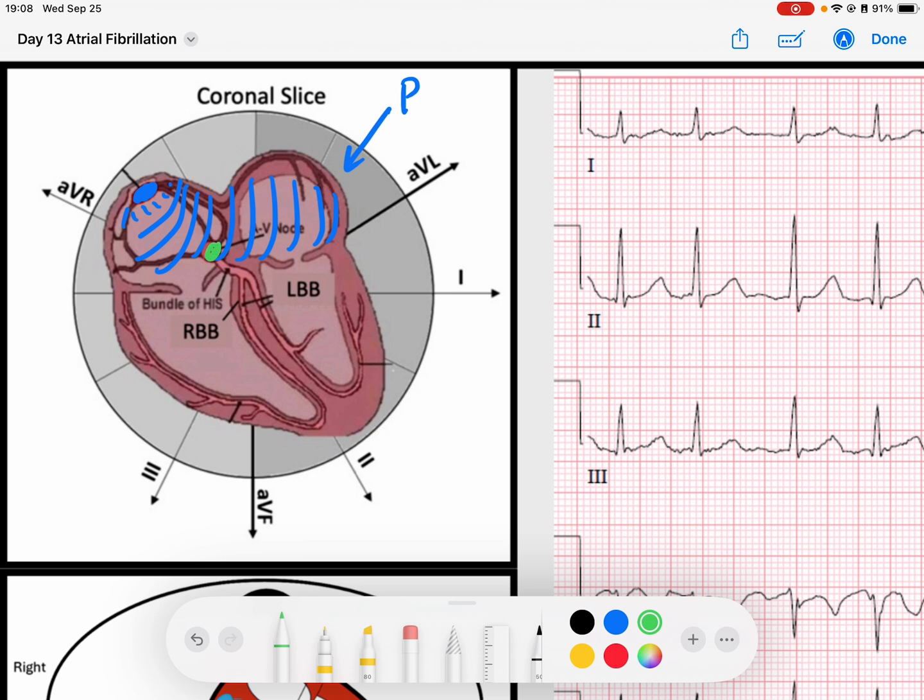The AV node then comes in contact with that signal. We know the AV node delays it by 120 to 200 milliseconds and then sends it down our His-Purkinje fibers to create our QRS complex. When we get this QRS and P wave coupling, that creates our normal sinus rhythm.